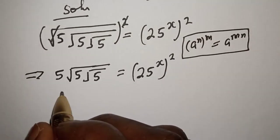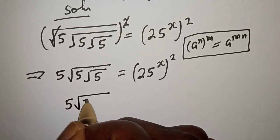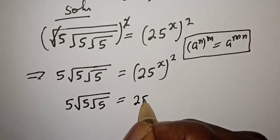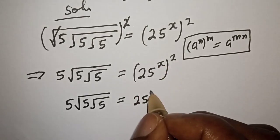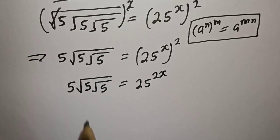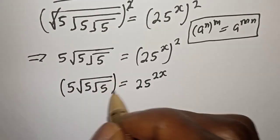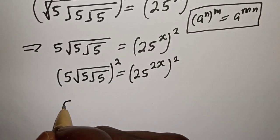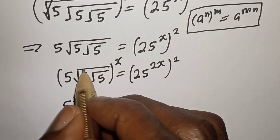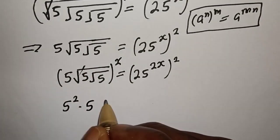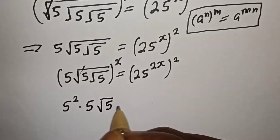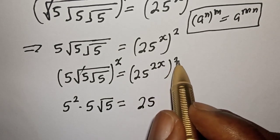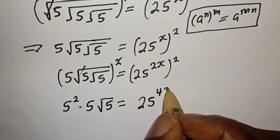Then this can be written as 5, square root of 5, square root of 5 is equal to 25 raised to power x multiplied by 2 — this is 2x. Now let's square both sides of this equation again. Square root of 5, square root of 5 is equal to 25 raised to power 4x.